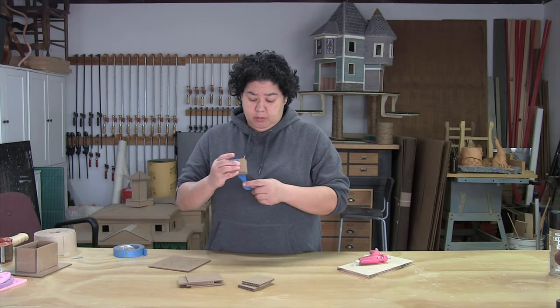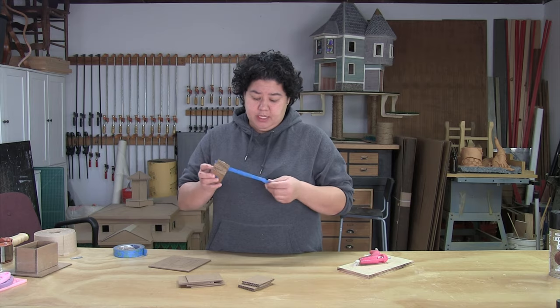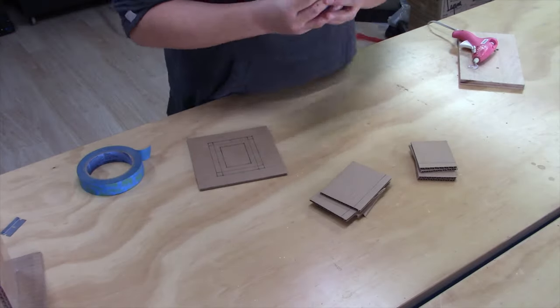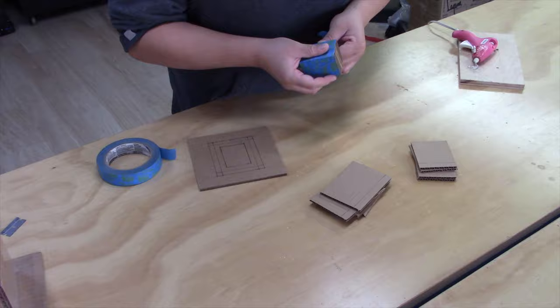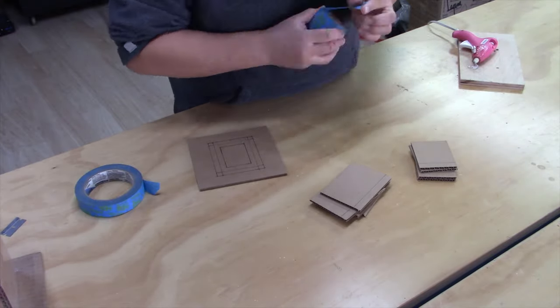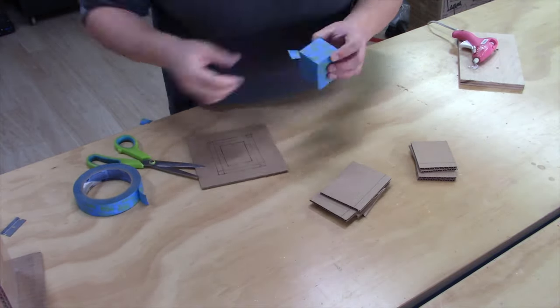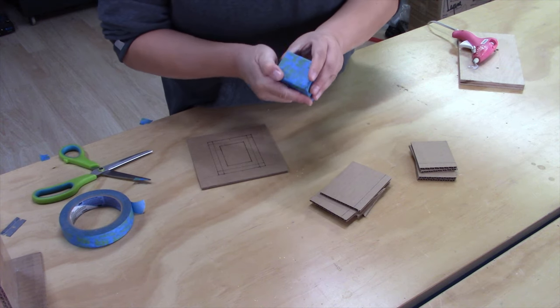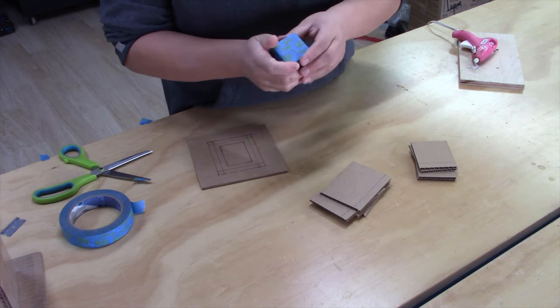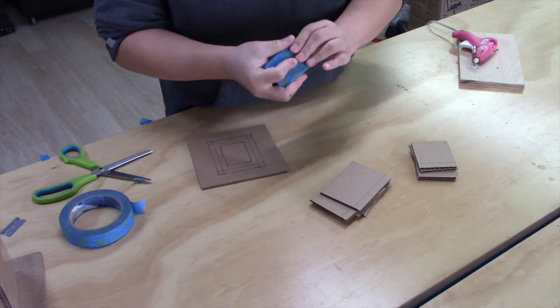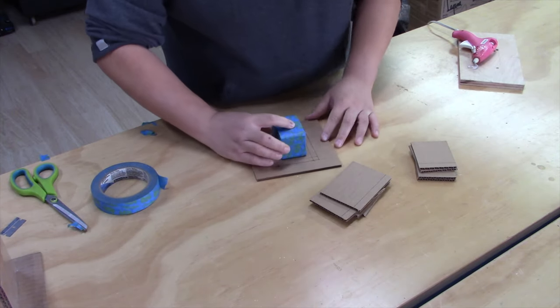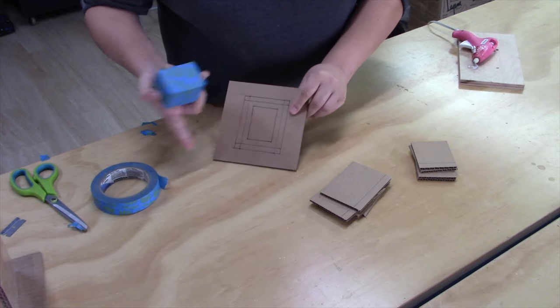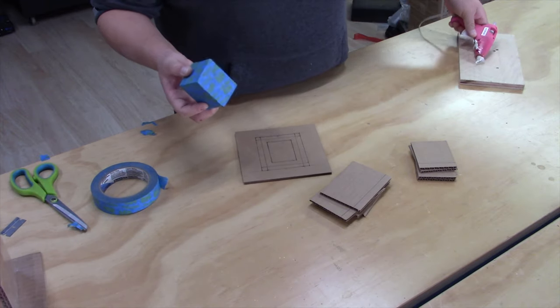Duct tape would work but just keep in mind that duct tape does have a bit of a texture to it. You just want to think about the plaster's liquid and it can run into any crevice, so you want to cover over anywhere that it may run into. Hot glue that down to my base and it's really handy having drawn out that diagram because I know where everything's going to go.